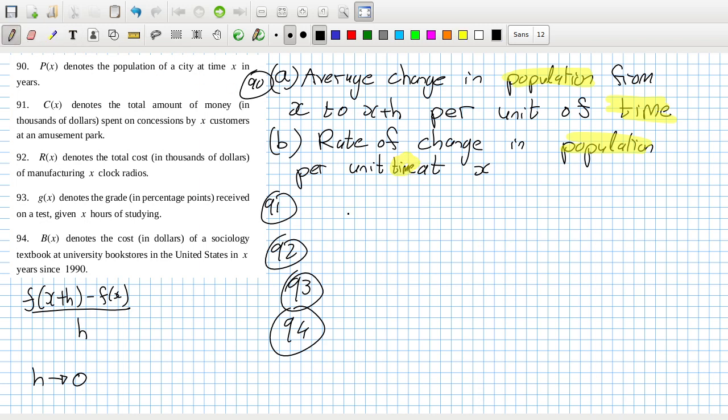And then in the second one, C(x) denotes the total amount of money spent on concessions by x customers, so that would be the average change in money spent on concessions from x to x plus h per unit customer, so rather than saying per customer.